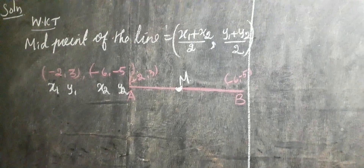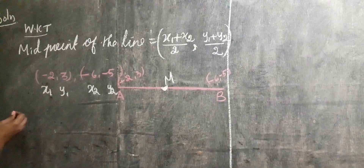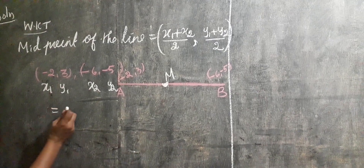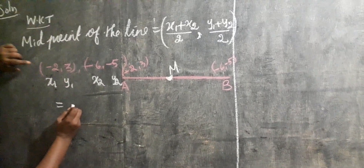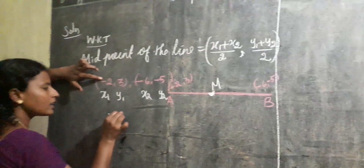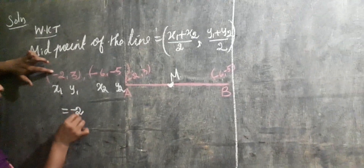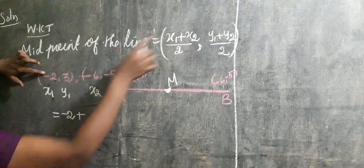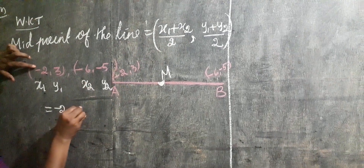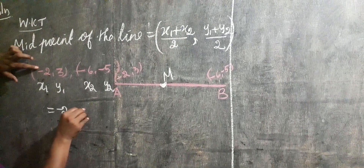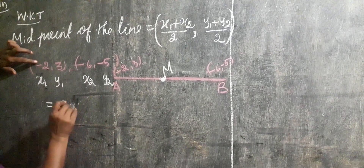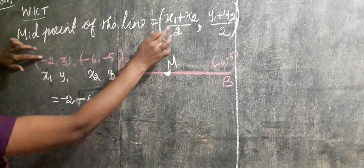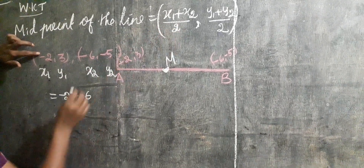We have to apply the formula. Midpoint of the line is equal to: x1 plus x2 divided by 2. What is the value of x1? Minus 2. Plus, what is the value of x2? Minus 6. So we apply: minus 2 plus minus 6, divided by 2.